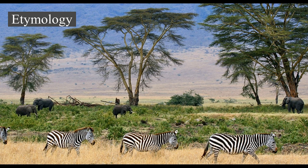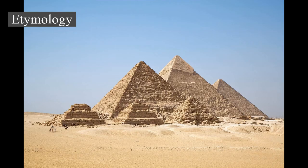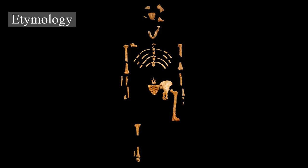Other etymological hypotheses have been postulated for the ancient name Africa. The first-century Jewish historian Flavius Josephus asserted that it was named for Epher, grandson of Abraham, whose descendants he claimed had invaded Libya. Isidore of Seville in his 7th century Etymologiae suggests Africa comes from the Latin 'aprica,' meaning 'sunny.'